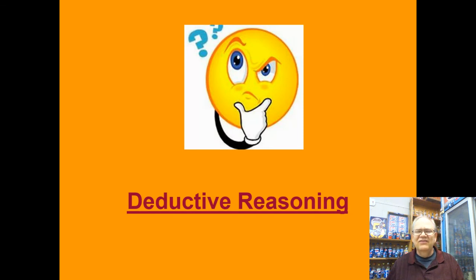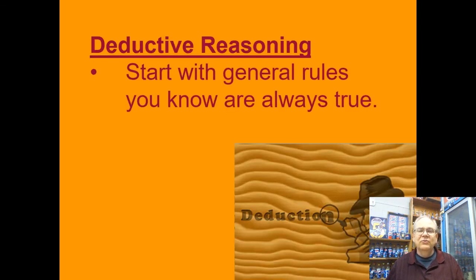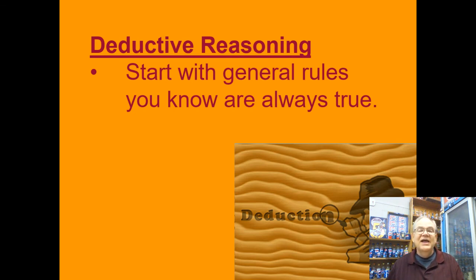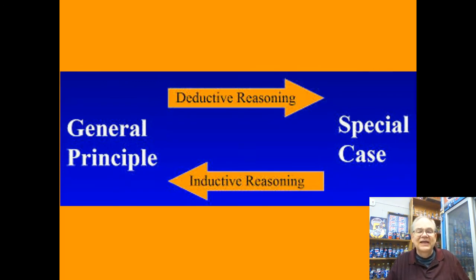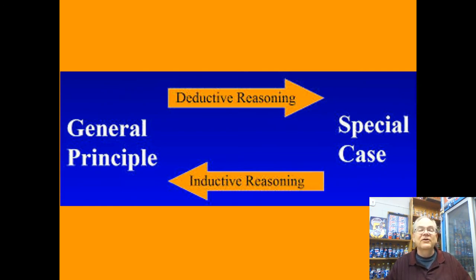Deductive reasoning is kind of the exact opposite of that. With deductive reasoning, you start with general rules that you know are true — things like the postulates we talked about in Chapter 1, things so obvious we just assume they're true, or things we've already proved are true. We start with those general rules and use them to prove specific conclusions, to explain why other things are true. In inductive reasoning you start with specifics and work toward general; with deductive reasoning it's the other way around — you start with the general principle and conclude that specific cases have to be true as well.